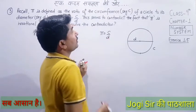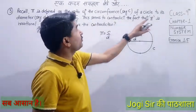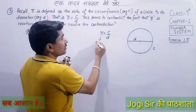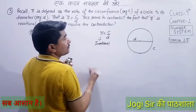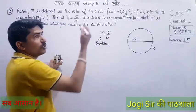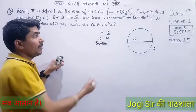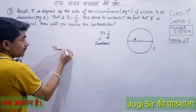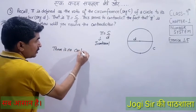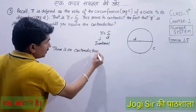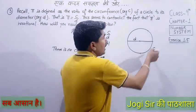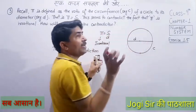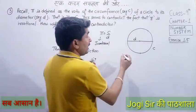This seems to contradict the fact that π is irrational. π ko hum irrational bolte hain, but here π appears in the form C/d, which looks like a rational form. However, there is no contradiction — why is there no contradiction? Because when we measure length or diameter by a scale, we measure only the approximate value.